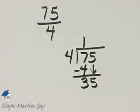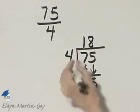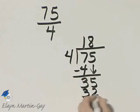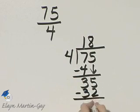I'll bring down my 5. How many times does 4 divide into 35? That would be 8 times, and 8 times 4 is 32, and I have a remainder of 3.